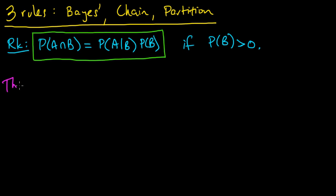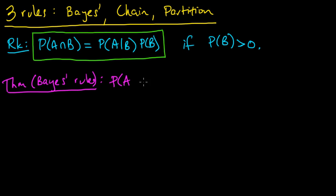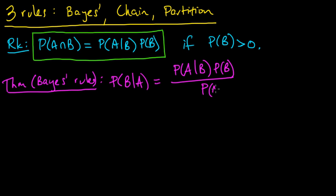Now we're ready for a theorem: Bayes' rule. You can hardly call it a theorem, it's so simple, except for the fact that it's so important. What does it say? The probability of B given A equals the probability of A given B times the probability of B, divided by the probability of A — if both probabilities are positive.